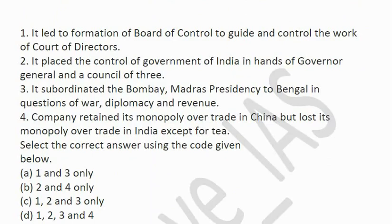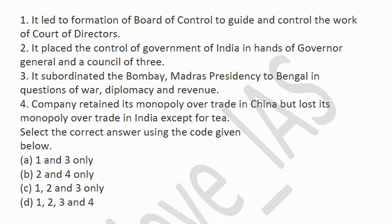Statements 1, 2, and 3 are correct. A Board of Control was established to guide and control the Court of Directors. The government of India was placed in the hands of the Governor General and a Council of Three. The Bombay and Madras Presidencies were subordinated to Bengal in questions of war, diplomacy, and revenue — meaning centralization of administration started from this act. Statement 4 is incorrect: the monopoly over India did not end with Pitt's India Act of 1784 but with the 1813 Act. The correct answer is C — 1, 2, and 3 only.